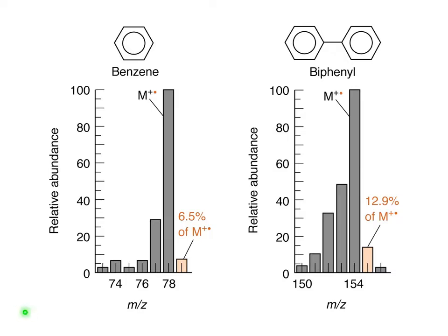Carbon-13 becomes visible when you have several carbons in a molecule. For example, benzene has six carbon atoms, which means it has a 6.5 percent probability of having a carbon-13, so 6.5 percent of benzene molecules will have a mass not of 78 but of 79. Biphenyl has 12 carbon atoms in a molecule, so the probability of having carbon-13 is almost 13 percent, and the peak at M+1 is 13 percent high.